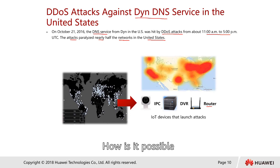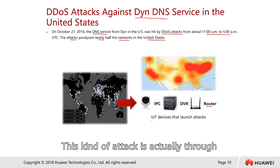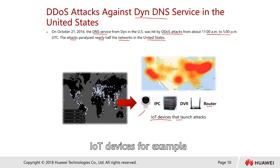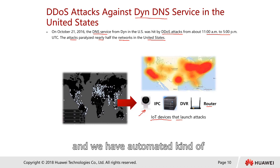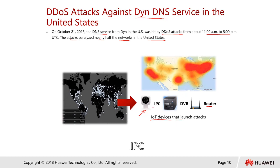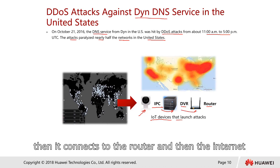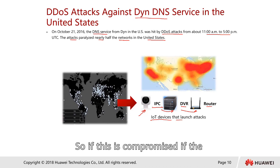How was this kind of attack possible? This attack was actually launched through IoT devices. IoT devices include, for example, IP cameras, temperature sensors, automated motion sensors, and things like that. IP cameras normally send the video stream to a DVR — the digital video recorder — which is then connected to a router and to the internet.